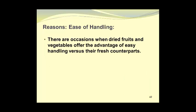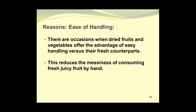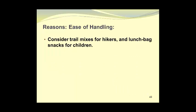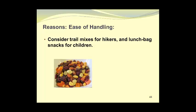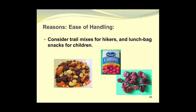There are occasions when dried fruits and vegetables offer the advantage of easy handling versus their fresh counterparts. This reduces the messiness of consuming fresh, juicy fruit by hand, and here we see an example of this as illustrated by the photograph of the rather juicy strawberry. Consider trail mixes for hikers and lunch bag snacks for children. This is an example of a trail mix containing a variety of dried fruits and nuts. Here's another example called craisins — these are dried cranberries which have the appearance of raisins, and they're an ideal snack for children in lunch boxes.